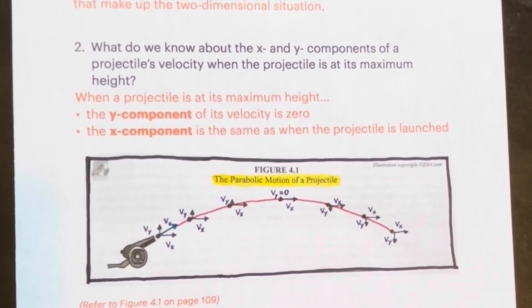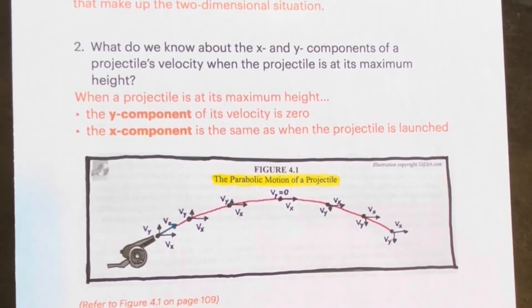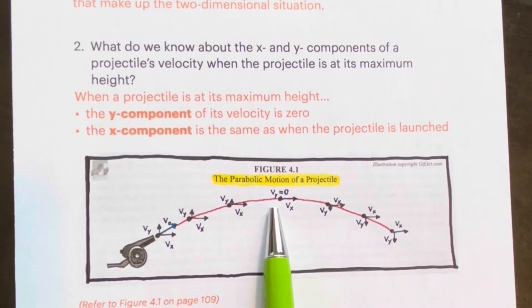Question number 2: What do we know about the X and Y components of a projectile's velocity when the projectile is at its maximum height? Alright, let's take a look at this. This is figure 4.9 on page 109. Here we have it broken out. This is the initial velocity, broken out into its Y components and into its X components. When a projectile reaches its maximum height, which is right here, the Y component of its velocity is 0. The X component is the same as when the projectile is launched.